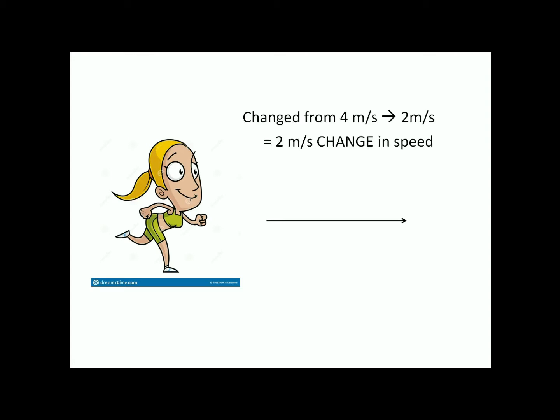To summarize, you have a change. Your speed changed from 4 meters per second to 2 meters per second. So 4 minus 2 gives you the change in speed. Don't get confused here that you have a 2 here and a 2 here as well. This is not your new speed. It is your change in speed. It's just a coincidence that the numbers are the same. But yeah, it's the change in speed.